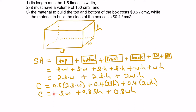We notice our cost function has three variables: length, width, and height. We need to relate them using our constraints. Constraint 1 says length must be 1.5 times width, so L = 1.5W.